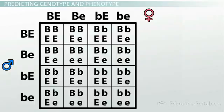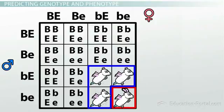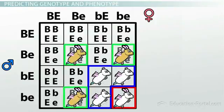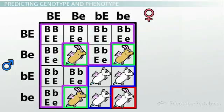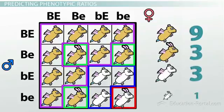Out of 16 different squares here, I have one square that will produce white hamsters with large ears. There are three squares here that predict white hamsters with little ears. There are also three squares that predict brown hamsters with big ears. And that leaves nine squares that predict brown hamsters with little ears. To summarize, our Punnett square predicts a 9 to 3 to 3 to 1 ratio among the four different phenotypes.